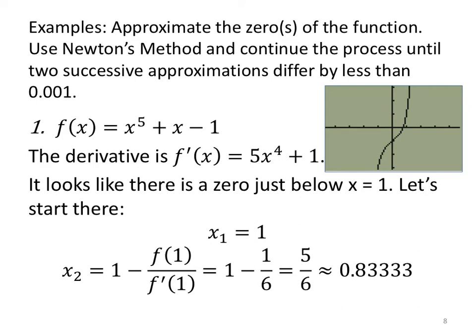What if we're not given an initial guess? We're going to approximate the zeros of the function using Newton's method and continue the process until two successive approximations differ by less than one thousandth. If f(x) = x⁵ + x - 1, here's a graphing calculator output of what that graph looks like. It looks like x = 1 is pretty close to the zero. The derivative is 5x⁴ + 1. There's a zero just below 1, so let's start there.